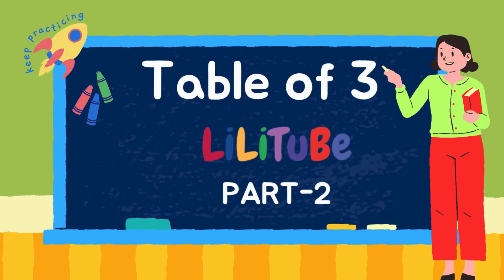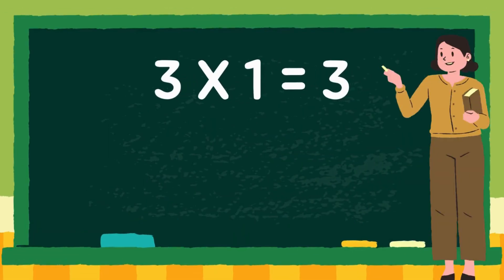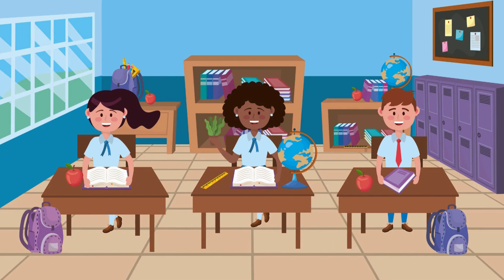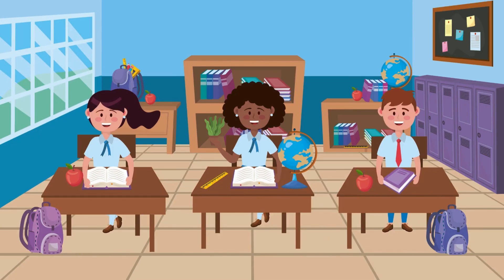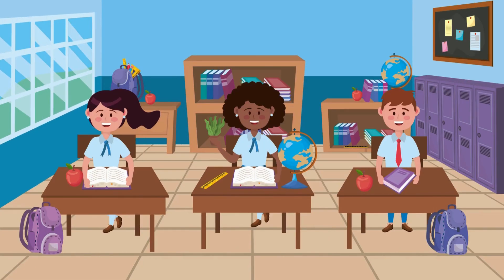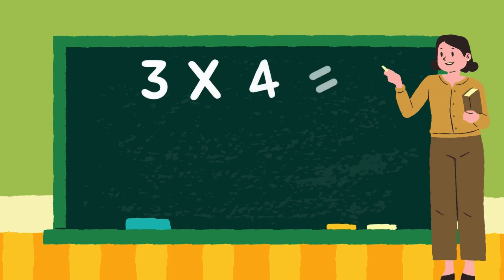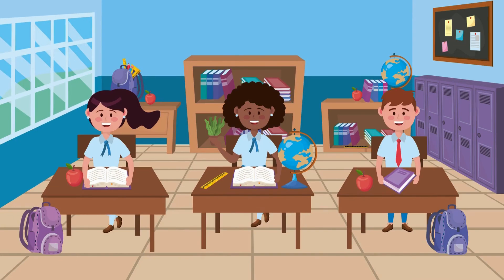Let's learn table of 3. 3 ones are 3. 3 2s are 6. 3 3s are 9. 3 4s are 12.